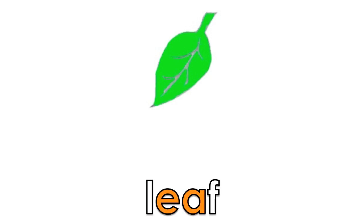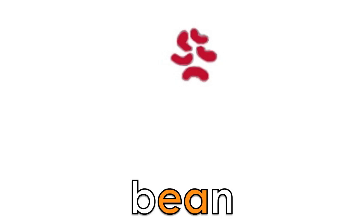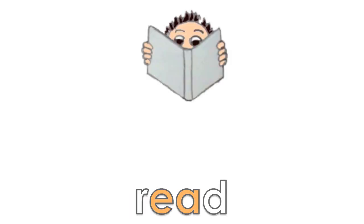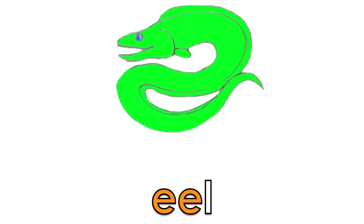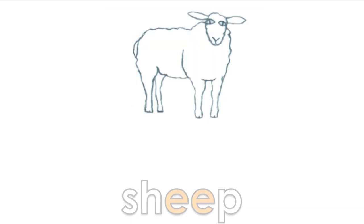Let's look at some examples. R-E-A-D: read. G-R-E-E-N: green. S-H-E-E-P: sheep. T-H-R-E-E: three.